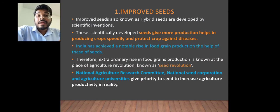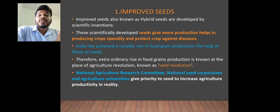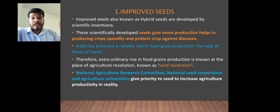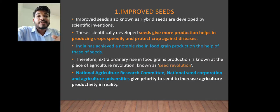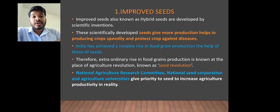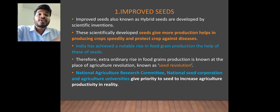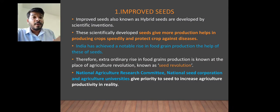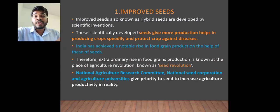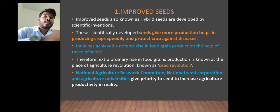There is a National Agriculture Research Committee (NARC), National Seed Corporation, and agriculture universities, all established with a main focus on agriculture productivity. They research how hybrid and different seeds can increase production in India. As our population has grown, we need to increase production accordingly, and many of our vegetables and crops now come from hybrid seeds.